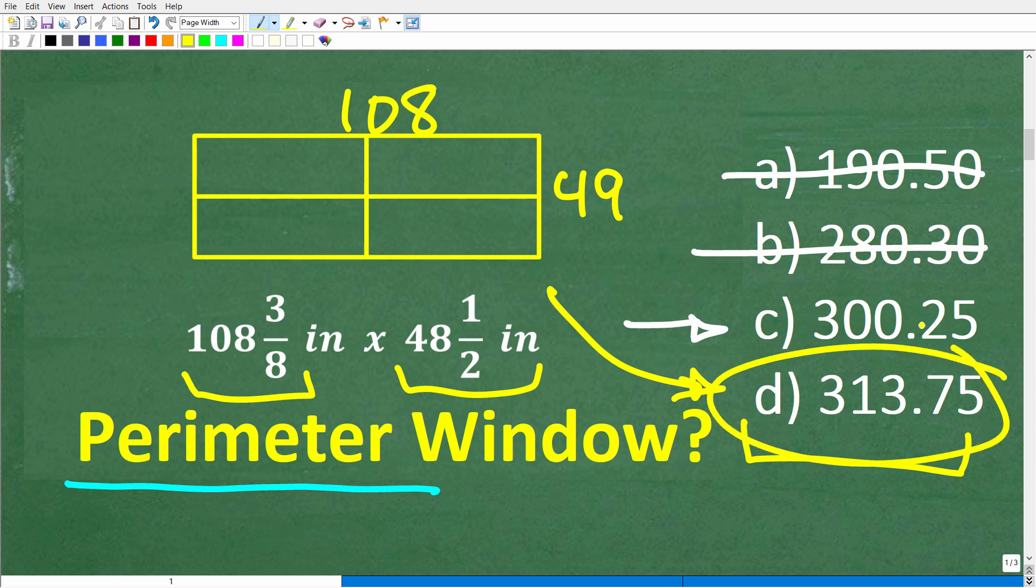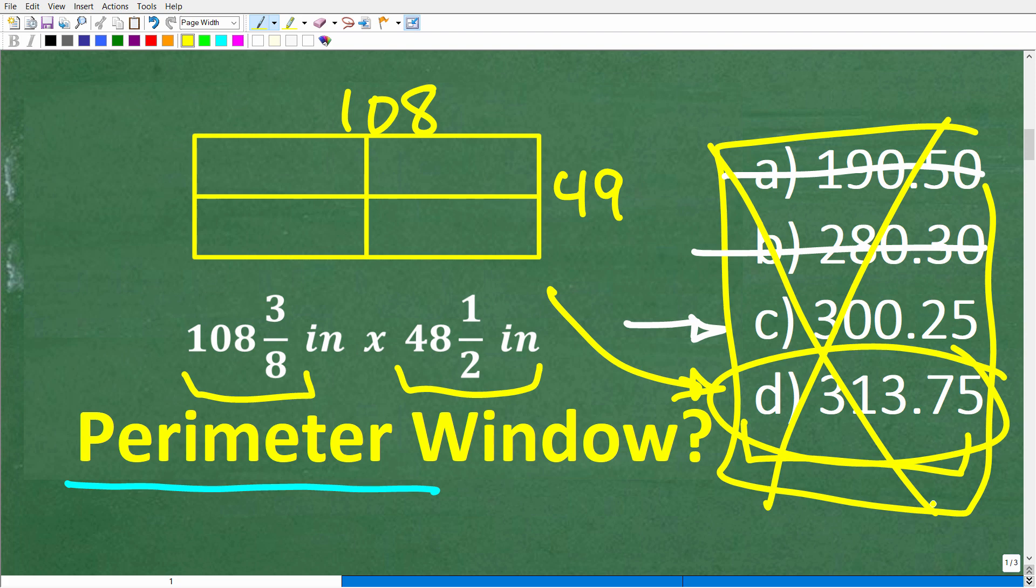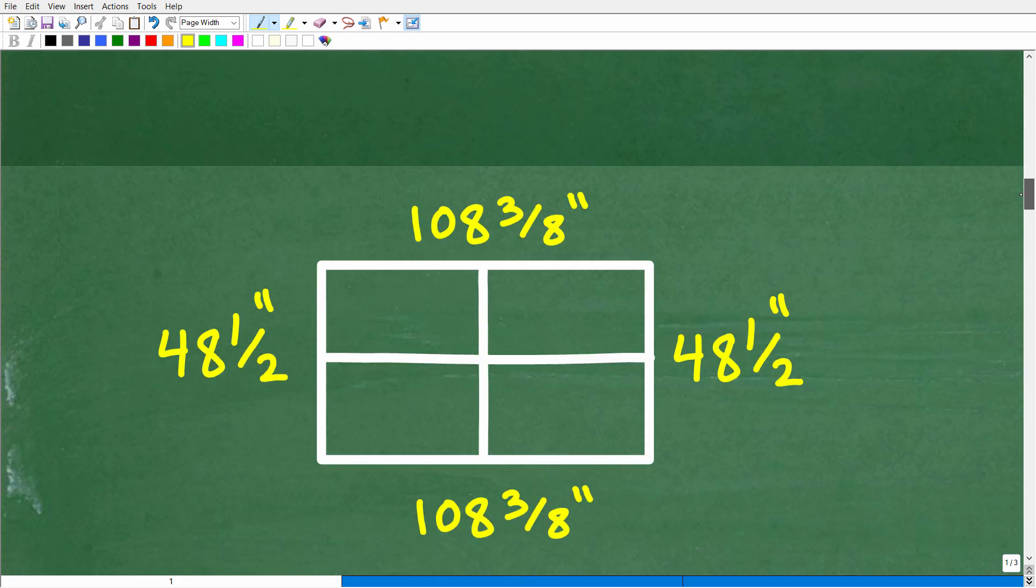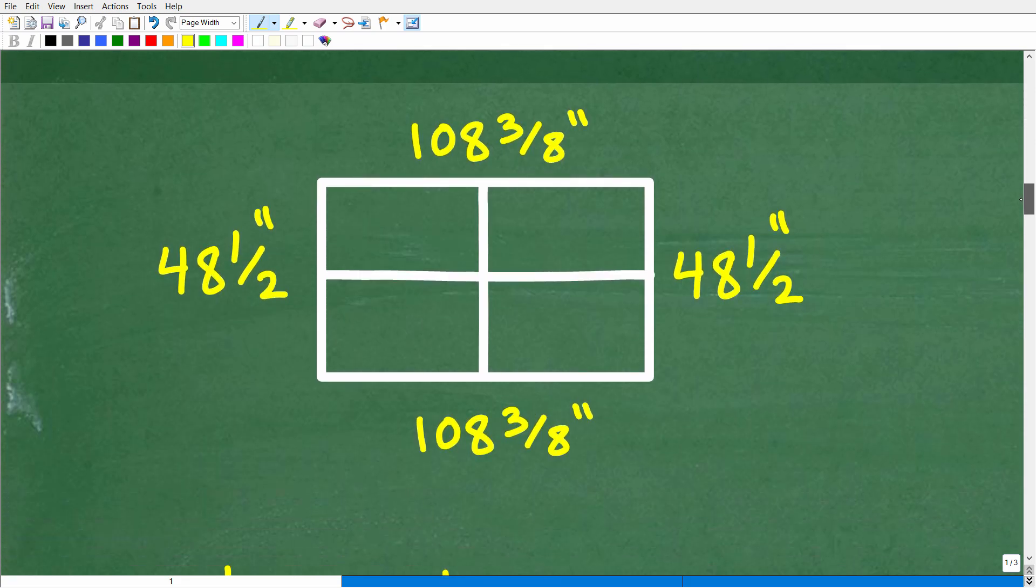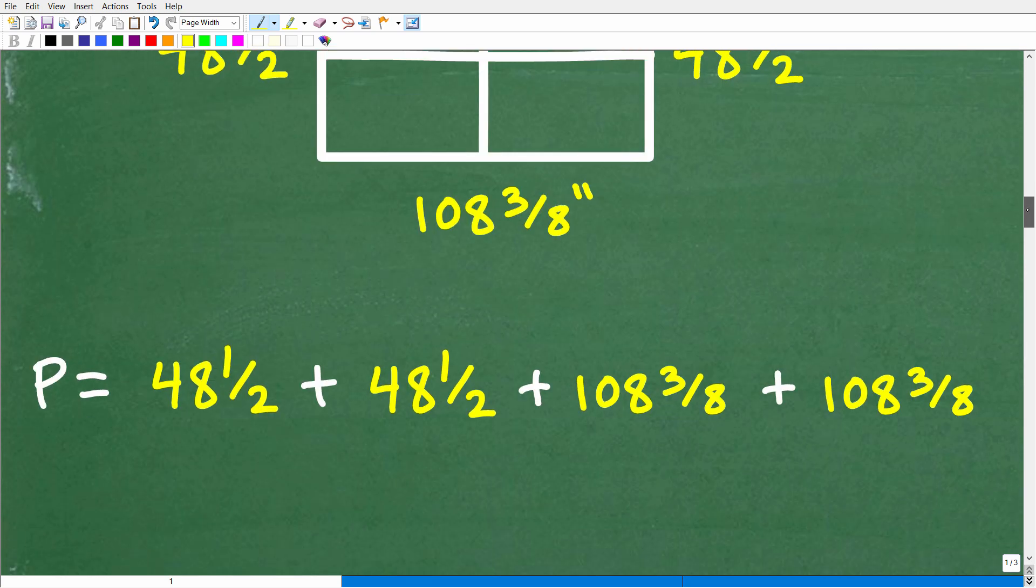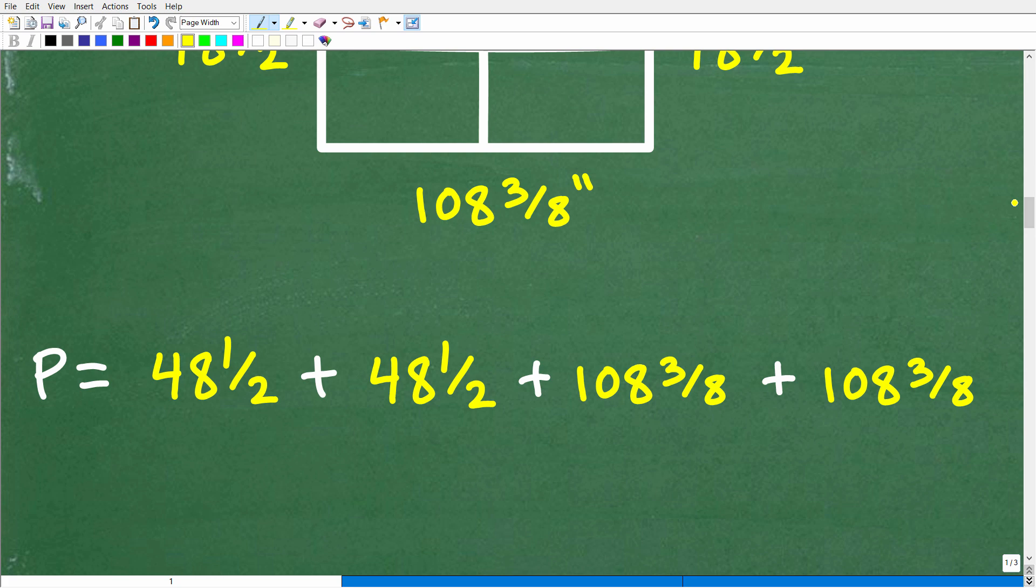Alright, now, if we didn't have a multiple choice question, well, we have no other option other than to add up these fractions. Alright, so let's go ahead and get into that right now. So, effectively, this is the actual problem. So here is our window with the dimension. So the length, the actual length is 108 and 3 8ths inches, and the width is 48 and 1 half inches. So the perimeter here is going to be the sum total of all the sides.